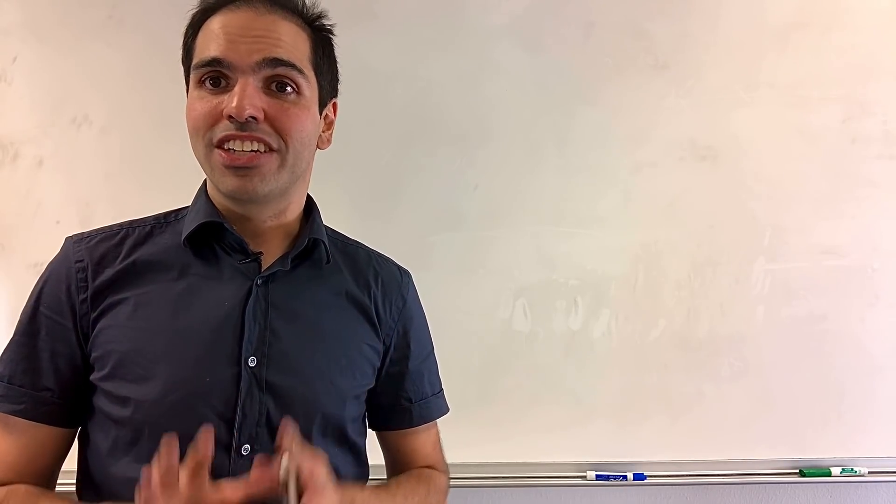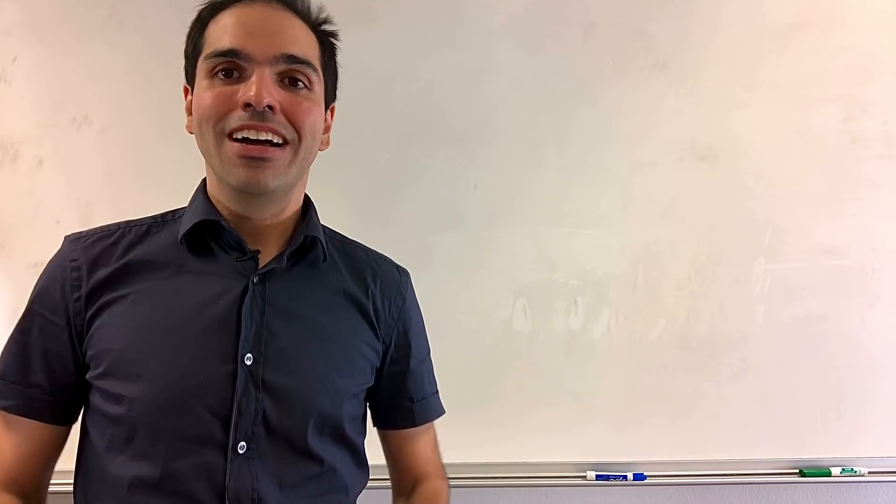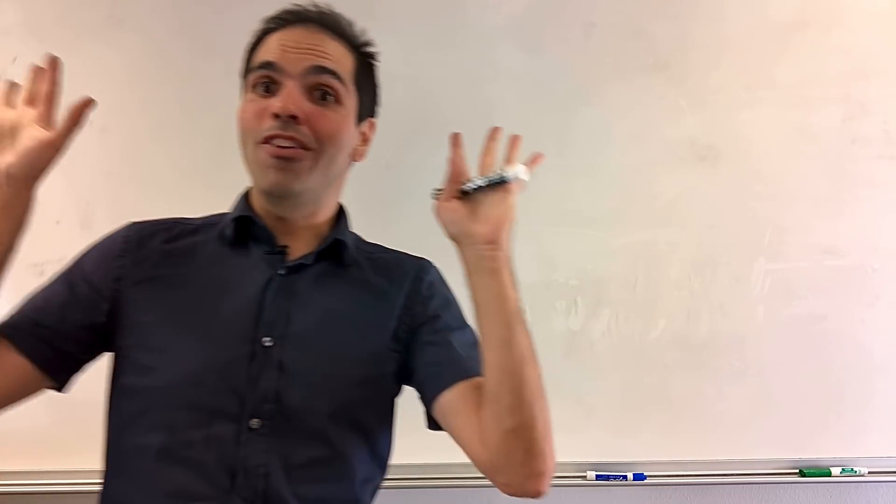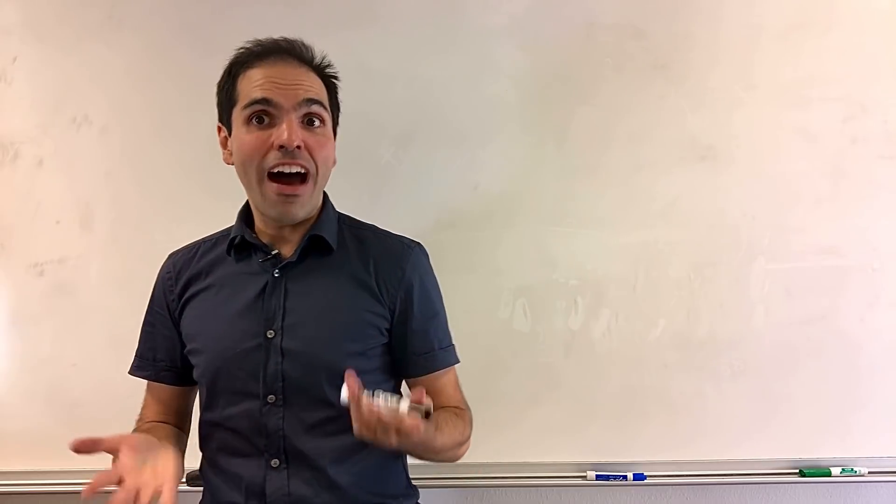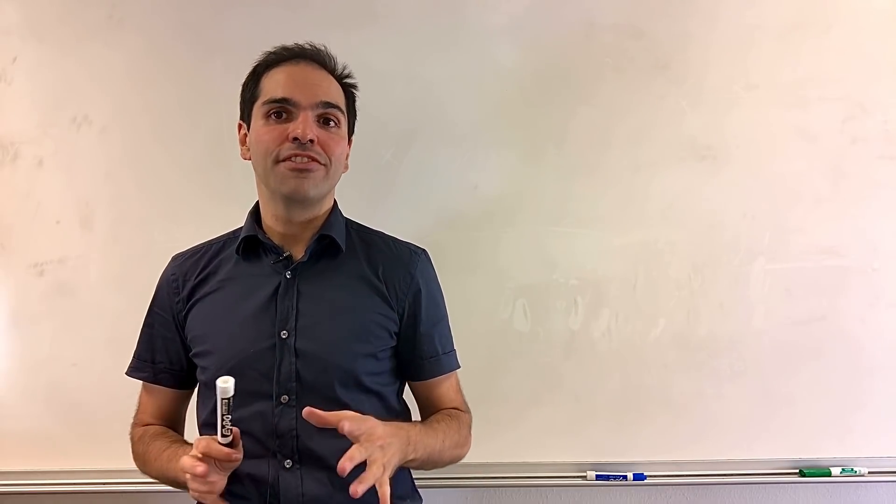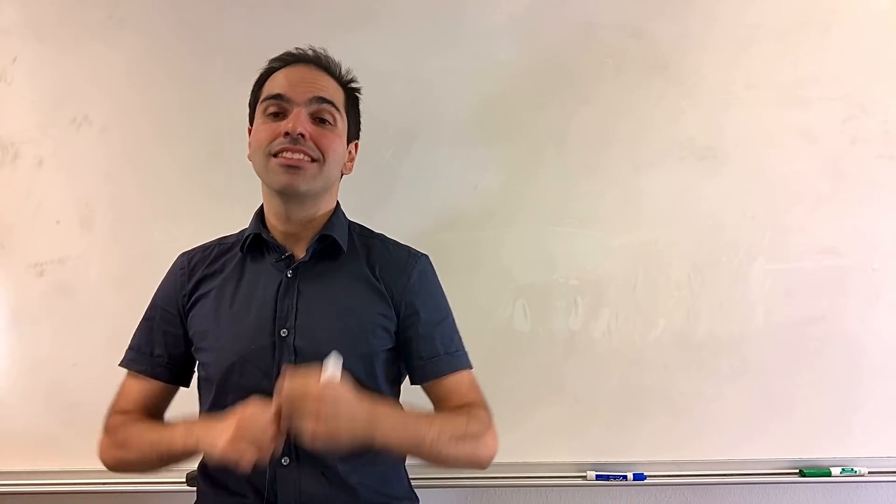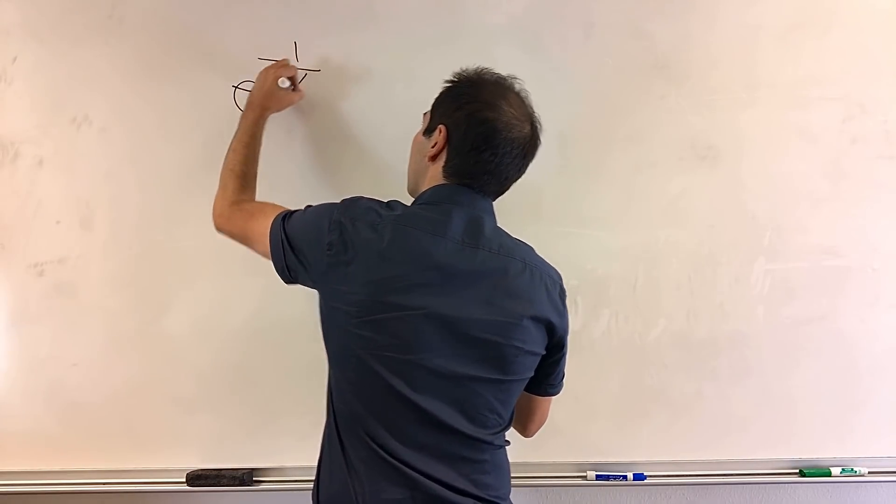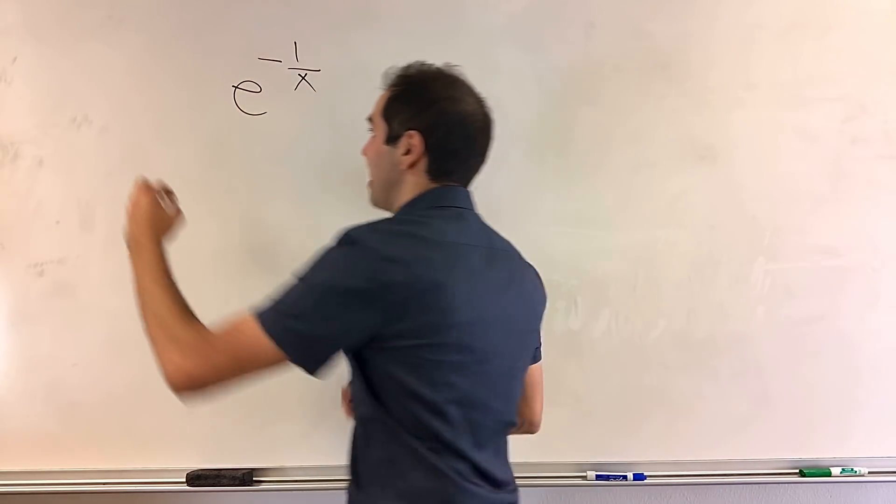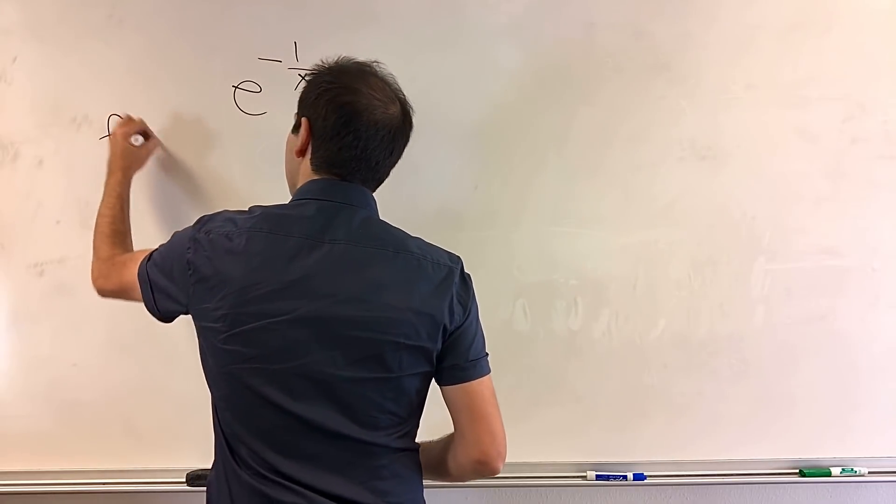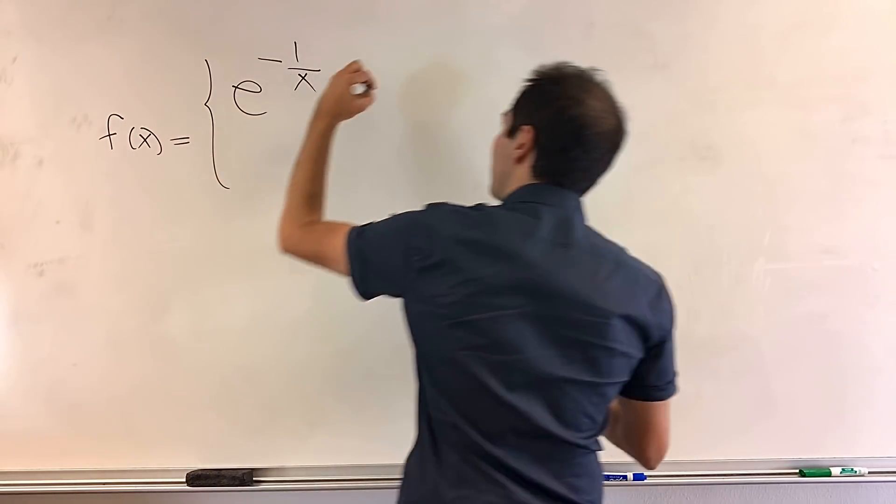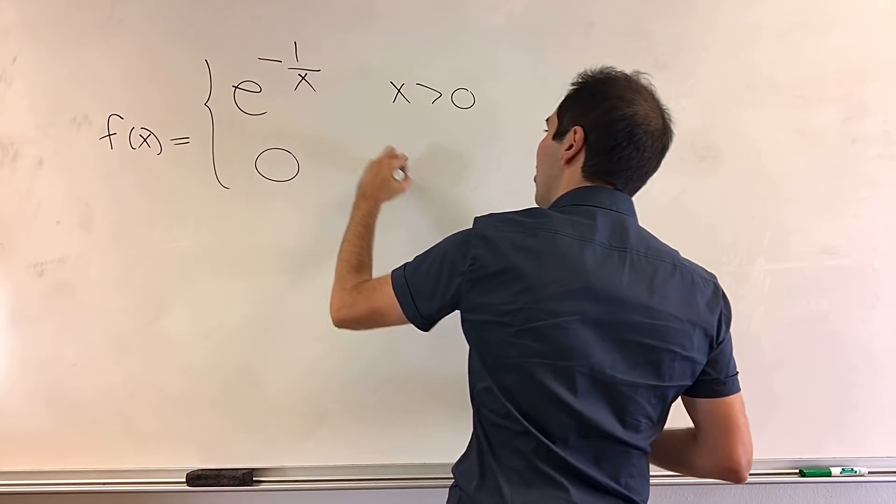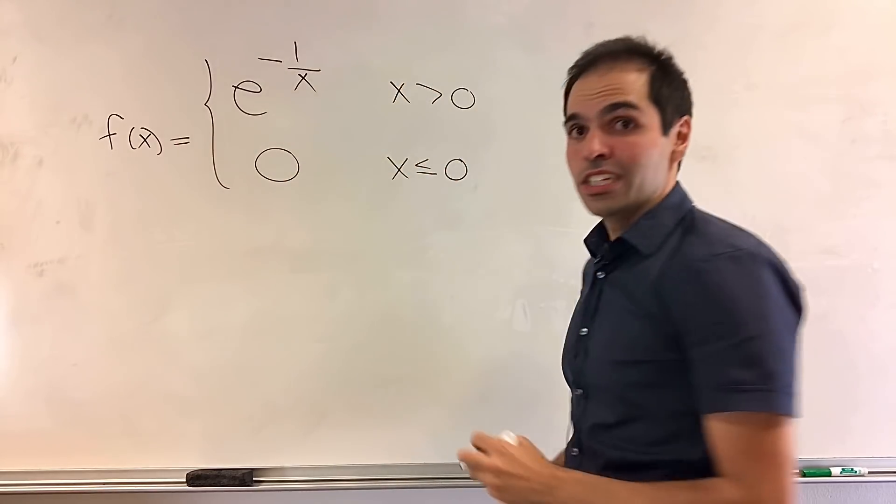Namely, this function will be non-zero, and yet all its derivatives at zero will vanish. And in fact, this is a function you may all have seen before, which is e to the minus 1 over x. More precisely, let f of x be e to the minus 1 over x if x is positive and zero if x is less than or equal to zero.